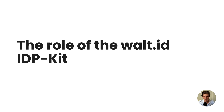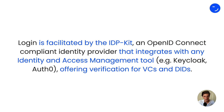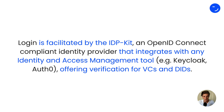To make this all possible, we use the Vault ID IDP kit, and it acts here as a facilitator. It is an OpenID Connect compliant identity provider that can be integrated with any identity and access management tool out there — for example, Keycloak, Auth0, or Firebase. The IDP kit makes sure that the verification of the VCs and DIDs is done correctly and that the user can use any credential wallet they want.